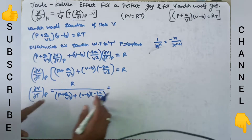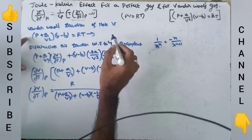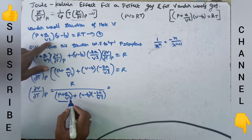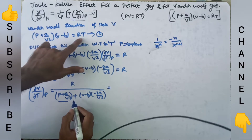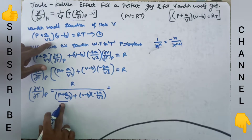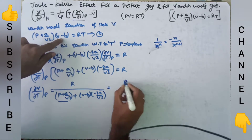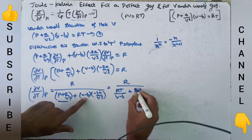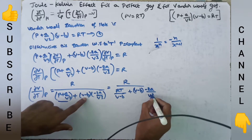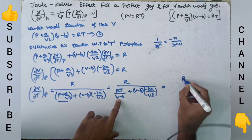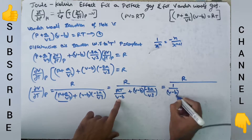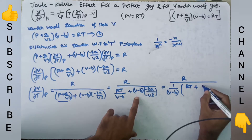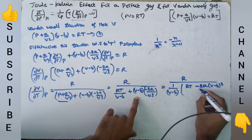From the Van der Waals gas equation, we substitute: in place of (P + A/V²), we write RT/(V - B), since (P + A/V²)(V - B) = RT. So this becomes R / [RT/(V - B) + (V - B)·(-2A/V³)]. Taking 1/(V - B) as a common denominator, we get RT + (-2A(V - B)²/V³), all over (V - B).